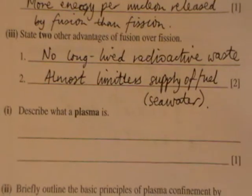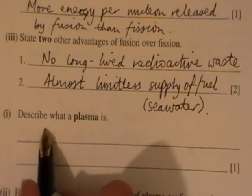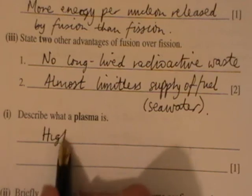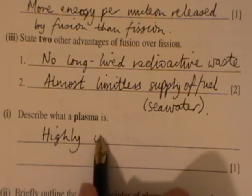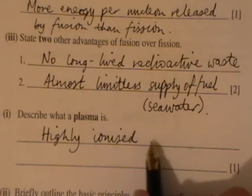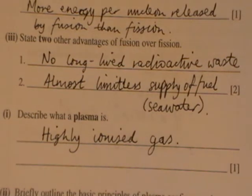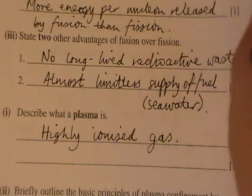Describe what a plasma is. There's only one mark for this, so we're looking for a fairly straightforward, simple answer. A plasma is the fourth state of matter where it's a highly ionized gas. That's a mixture of protons and electrons moving around in rapid random motion, a bit like molecules in a gas.